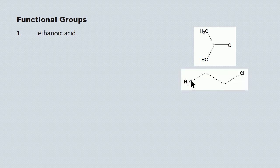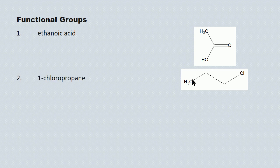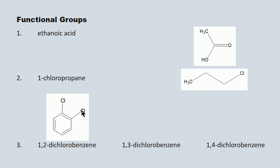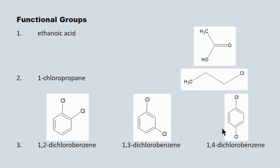For alkyl halides: a three-carbon chain with a terminal chlorine on the first carbon is 1-chloropropane — a number is needed because there's also a possible 2-chloropropane if the chlorine is attached at the second carbon. Three isomers of dichlorobenzene are shown: 1,2-dichlorobenzene, where chlorines are at the first and second sites; 1,3-dichlorobenzene, where chlorines are at the first and third sites; and 1,4-dichlorobenzene, where chlorines are at the first and fourth sites. These three molecules are isomers.